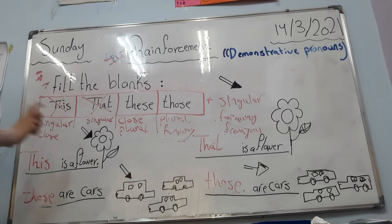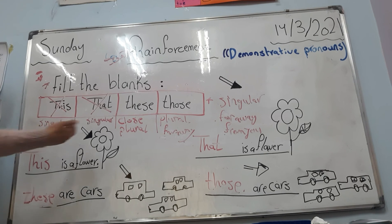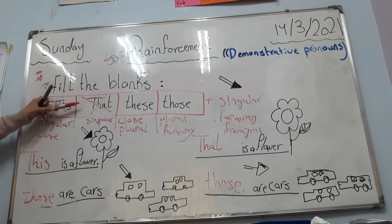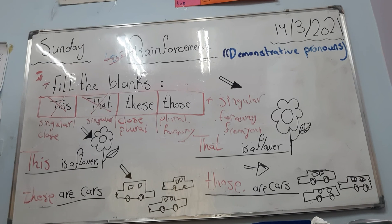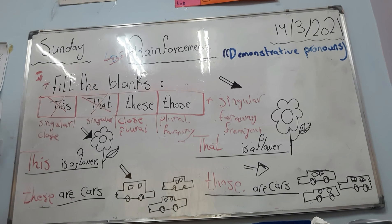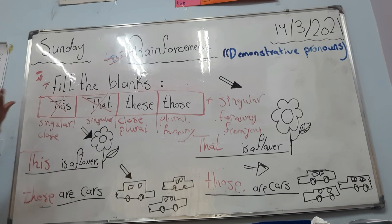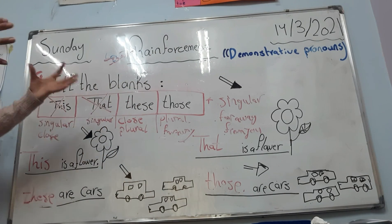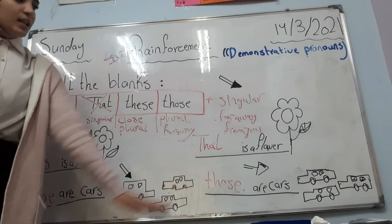To summarize: we use 'this' for singular and something close to you. We use 'that' when you have something singular but far away from you. 'These' we use when you have something plural and close to you. 'Those' is for plural but far away — a group of things that are far from us.